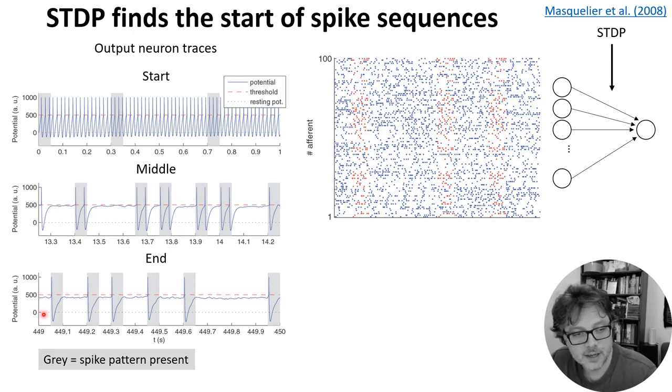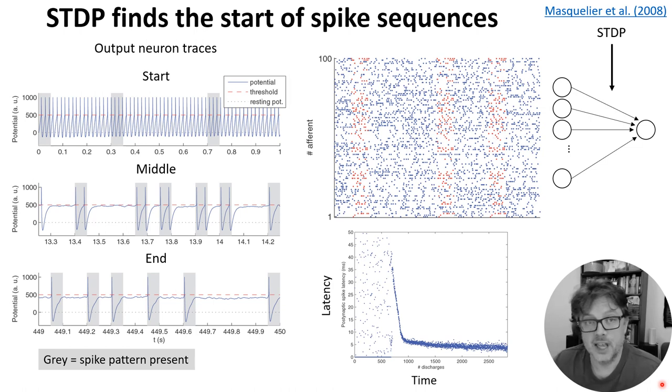But eventually it learns to fire only once the spike pattern is present. And in fact, by the end, it learns to fire at the beginning of the presentation of the spike pattern. And if you look more carefully, what's happening is that at first it learns to pick a random subset of the neurons in the spike pattern group that happened to fire at the same time. This is the correlation and competition mechanism from the previous slide. And it leads to the output spike happening at some random point in the sequence here, about two thirds, three quarters of the way through. And it could be early or it could be late because it's entirely random which neurons it picks to do that. But then STDP's preference for lower latency kicks in and it shifts towards the neurons in the pattern that fire earlier until it reaches the beginning of the pattern.